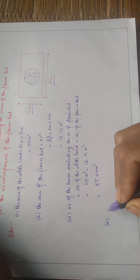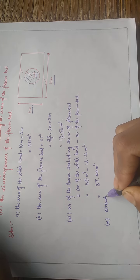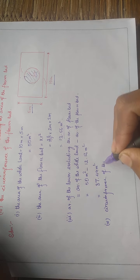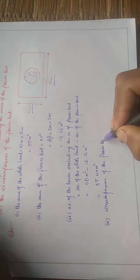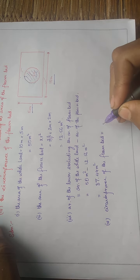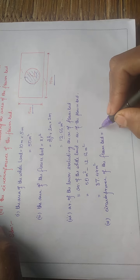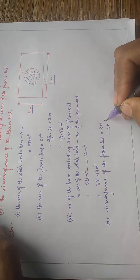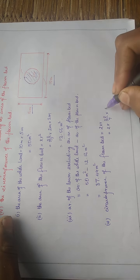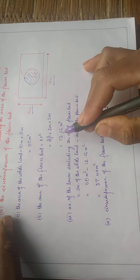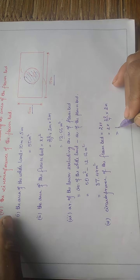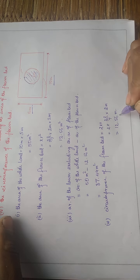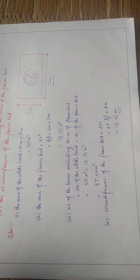The circumference of the flower bed equals 2 π r, which is 2 multiplied by 22/7 multiplied by 2 meters, giving approximately 12.56 meters. That is the circumference of the flower bed.